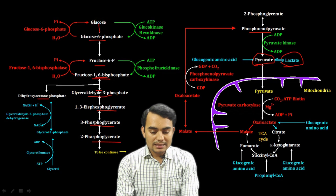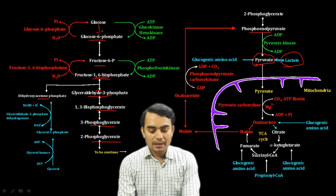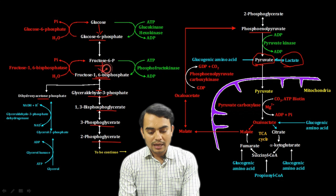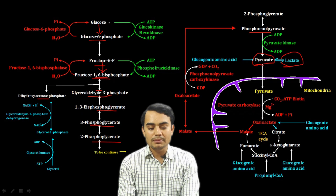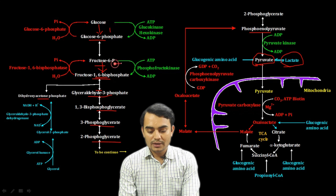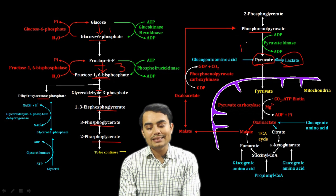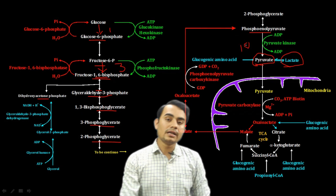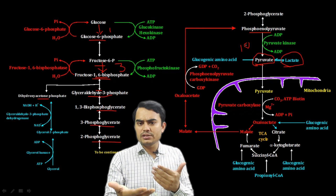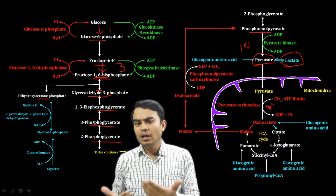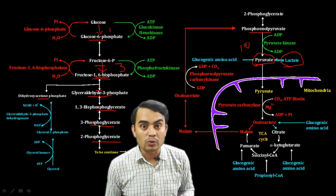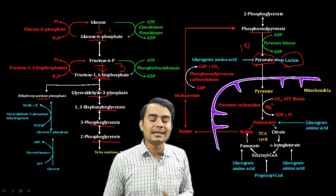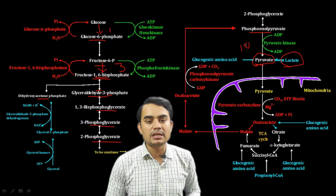The three irreversible steps are: first (glucose → glucose-6-phosphate), third (fructose-6-phosphate → fructose-1,6-bisphosphate), and tenth (phosphoenolpyruvate → pyruvate). If all steps were reversible, gluconeogenesis could simply run glycolysis in reverse. But since these three steps are irreversible, alternate bypass reactions are needed at those points.